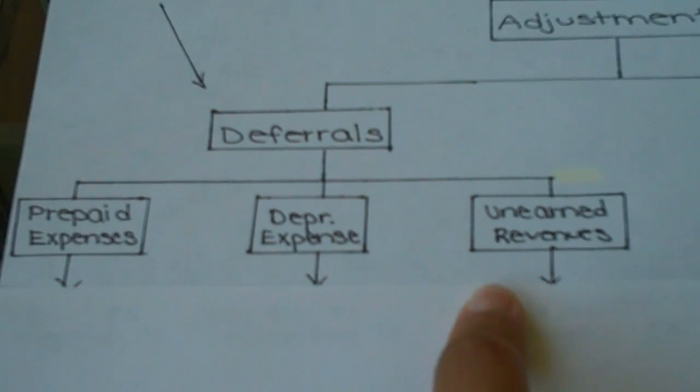And then finally unearned revenues. If we've earned any of that customer's prepayment at the end of the accounting period, we're going to have to move it out of a liability account and into a revenue account.